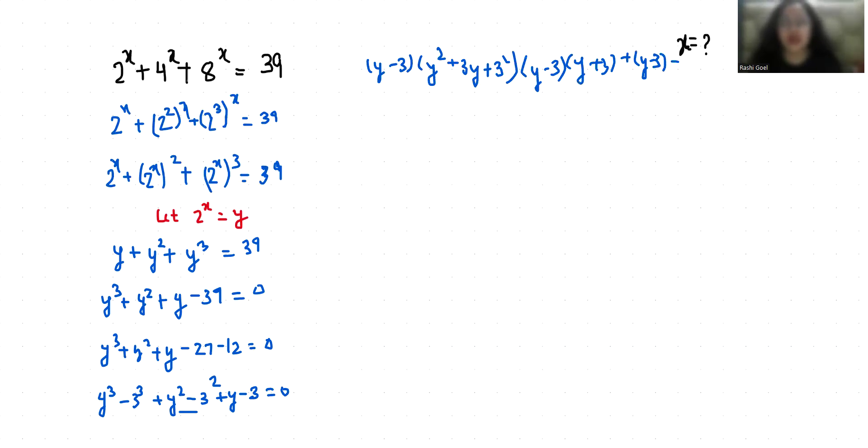So (a - b)(a + b) plus y - 3 = 0. So I am going to take this y - 3 as common. So y² + 3y + 3² is 9, plus y + 3 + 1 = 0. So (y - 3)(y² + 4y + 13) = 0.